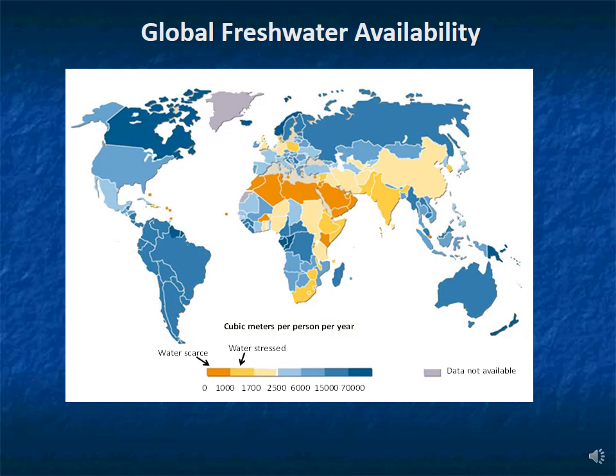Looking at global freshwater availability in cubic meters per person per year, continents that are water abundant are essentially South America and much of North America. Australia wouldn't seem to have great freshwater availability, but its population is less than that of California, so what little water it has is able to support them. Parts of Africa — specifically the equatorial region — have lots of water, but other parts are definitely arid. Moving to India and China, the number of people is very large even though the water supply is large.